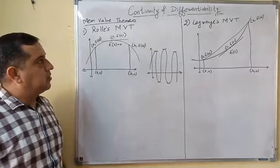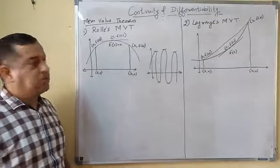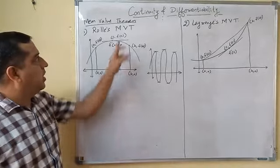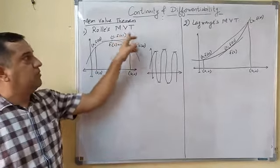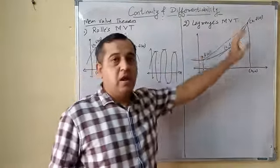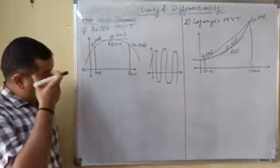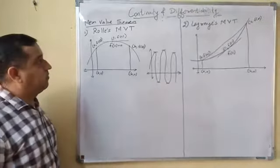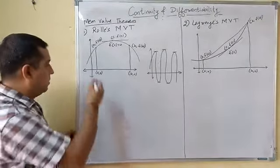In your syllabus there are two Mean-Value Theorems. One is Rolle's Mean-Value Theorem and the other is Lagrange's Mean-Value Theorem. Now what is Rolle's Mean-Value Theorem and what is Lagrange's Mean-Value Theorem?